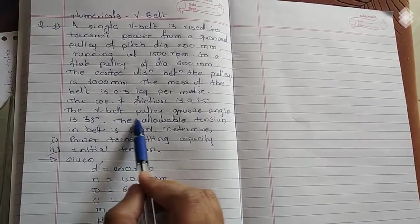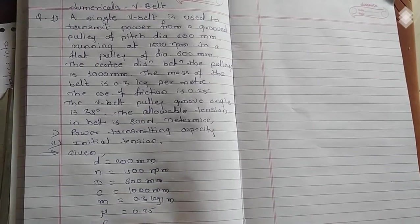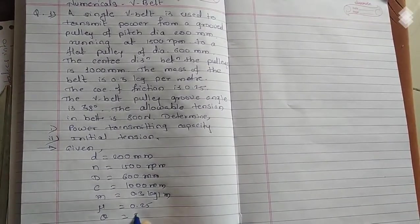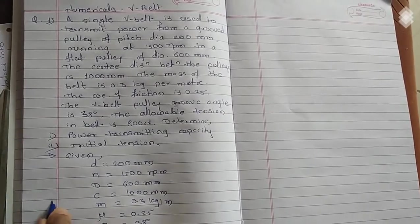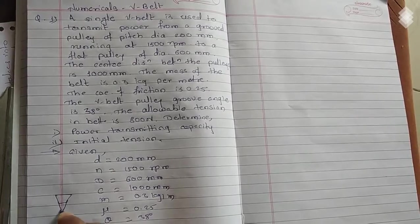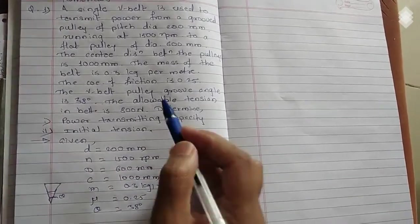Then V-belt pulley groove angle is, that is theta. Here we have the V-belt. So the angle of the belt is given, this is the angle while extending the edge, this angle is theta, this is given as 38 degrees.